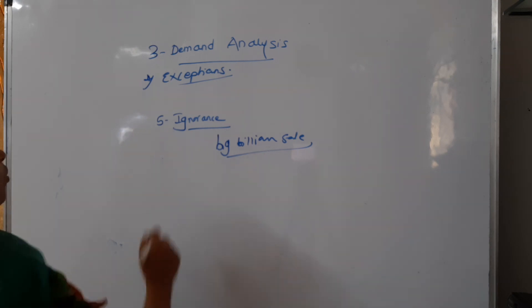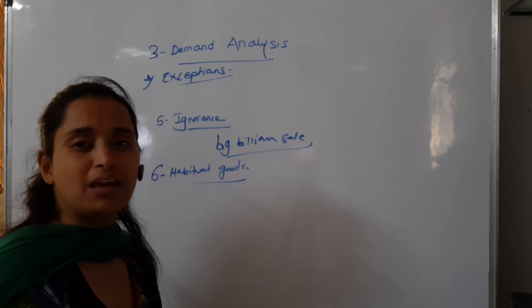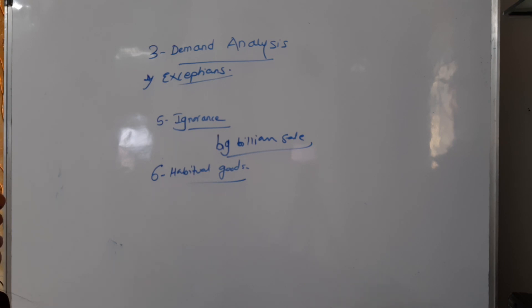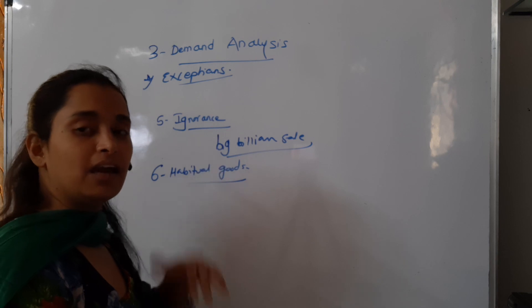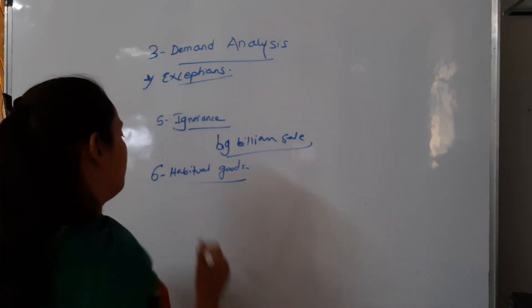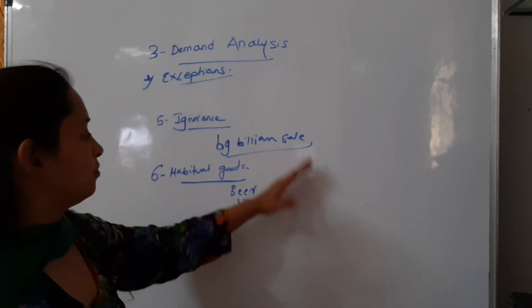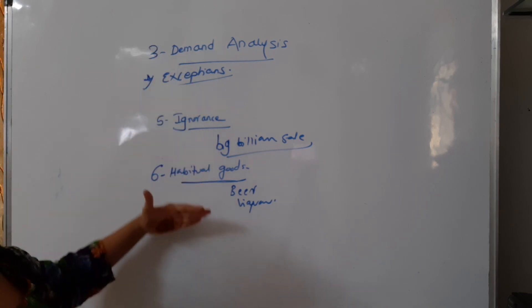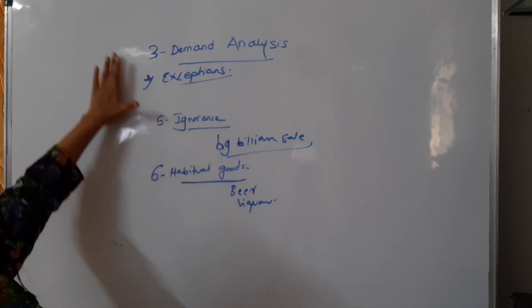The sixth and last exception is habitual goods. Habitual goods refer to things we are addicted to or like very much. Due to habit, whether prices increase or decrease, we do not give up these things. For example, a person who drinks heavily — beer or liquor — no matter how much prices rise, they still need it. So the law of demand does not apply here. These are all the exceptions. Thank you so much.